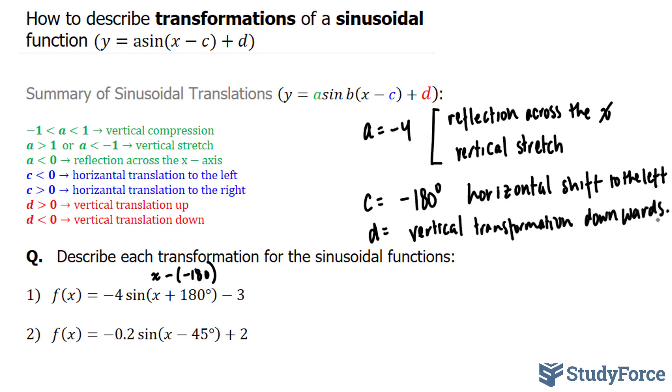Now that we've covered number one, let's move on to number two. This time our function is negative 0.2 sine of x minus 45 degrees, plus 2.